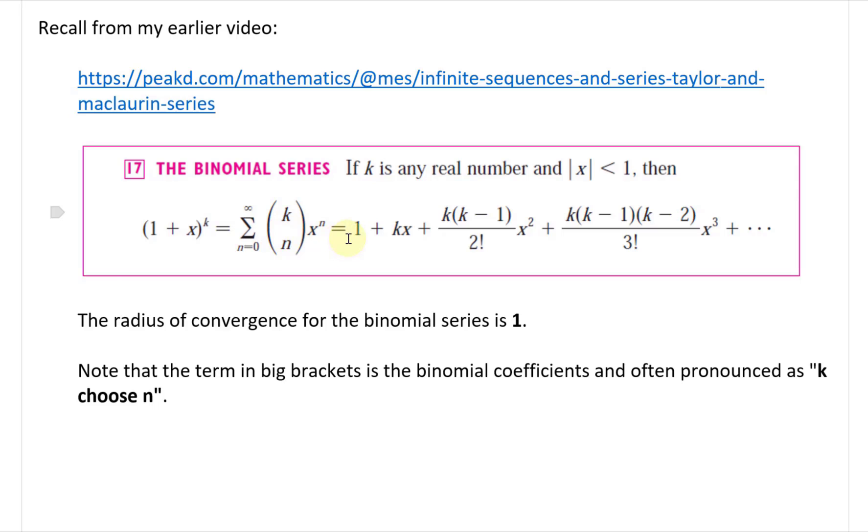And this equals 1 plus kx plus k times k minus 1 divided by 2 factorial times x squared plus k times k minus 1 times k minus 2 divided by 3 factorial times x cubed, and so on. The radius of convergence for the binomial series is 1.